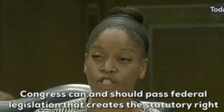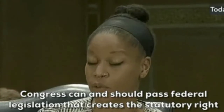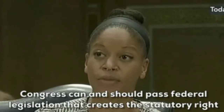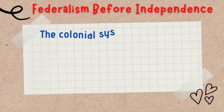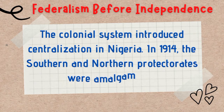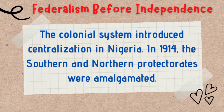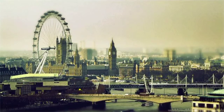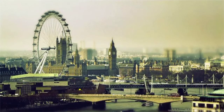Federalism before independence: don't forget that Nigeria was colonized by Britain. In 1914, when Britain was in charge of Nigeria, the southern and northern protectorates were amalgamated. The colonial system of government introduced centralization of power, so from the time of Clifford up to about 1939, powers of administration and government were centralized. However, in 1939 the southern protectorate was split into western and eastern provinces.